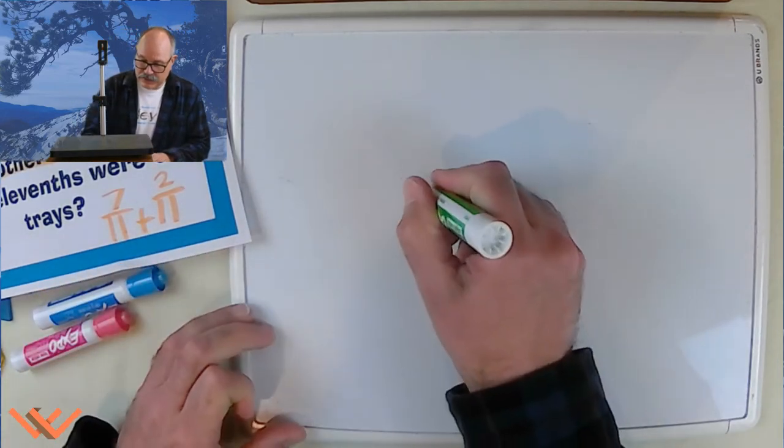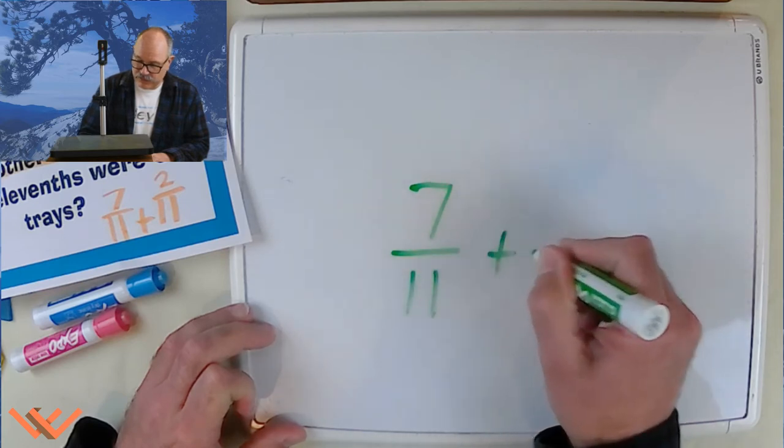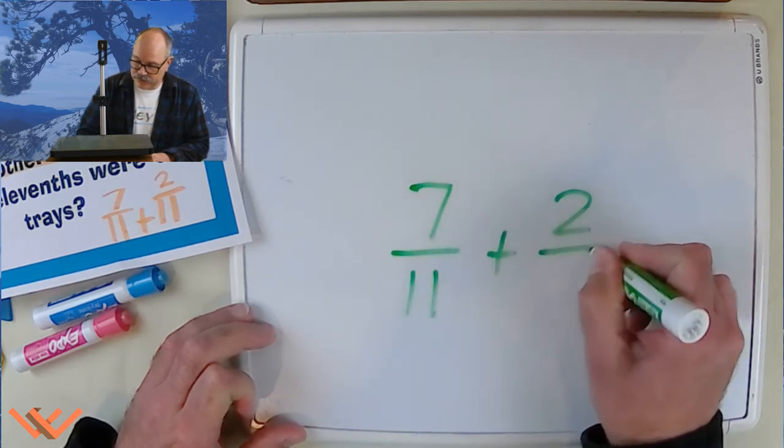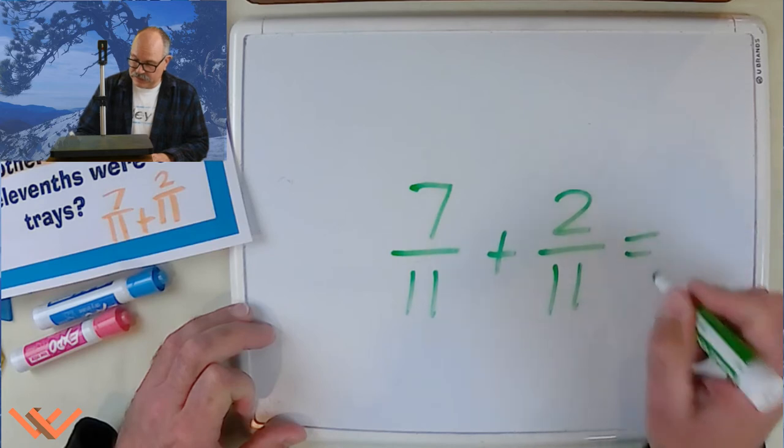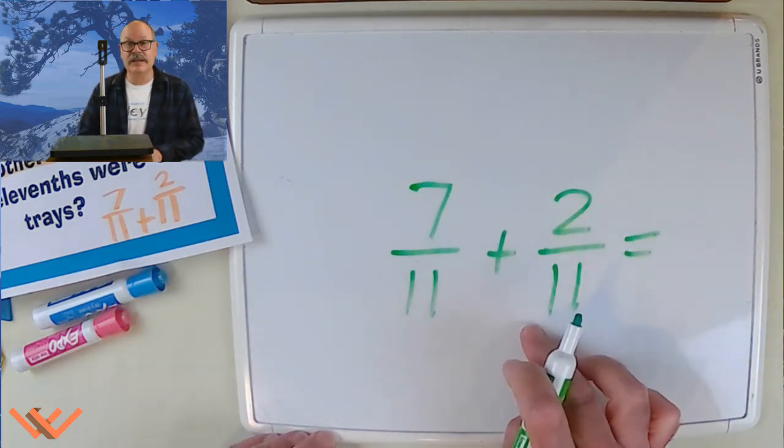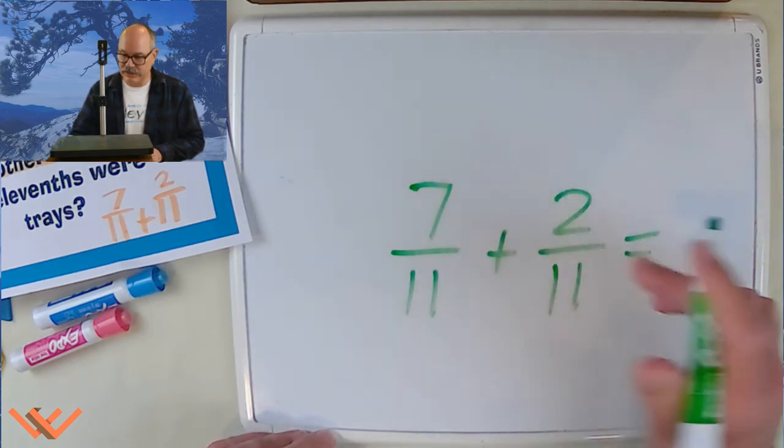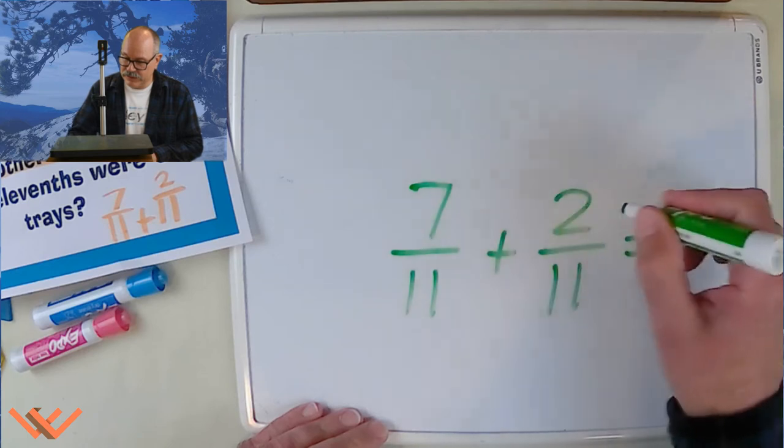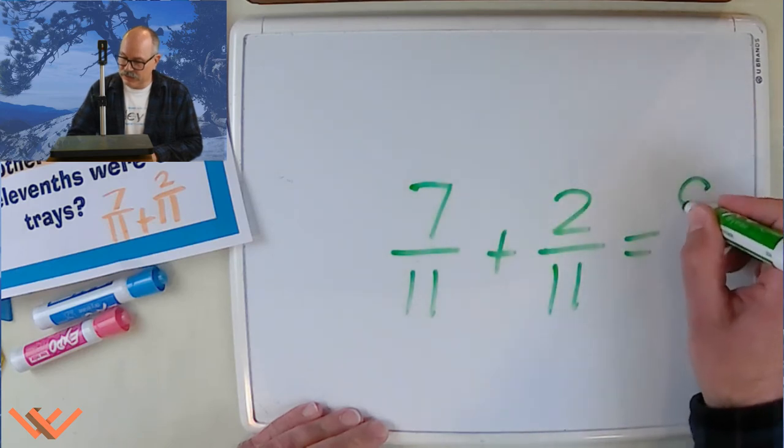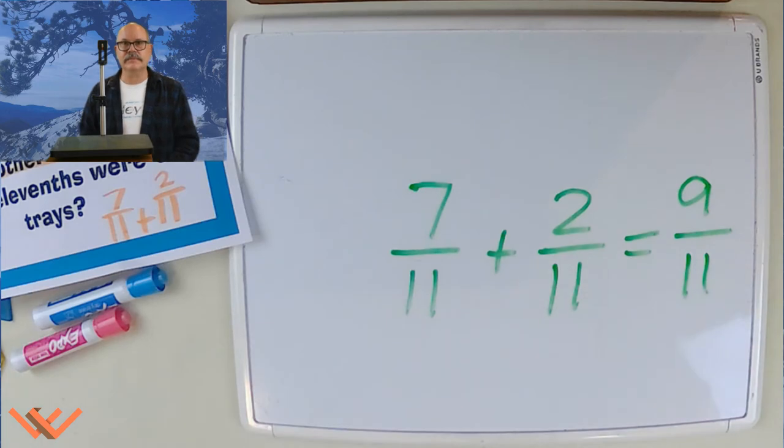So again, I have 7 elevenths plus 2 elevenths is equal to what? Well, since the denominators are the same, we just add up the numerators. So, that would equal 7 and 2 equals 9 elevenths. There you go. Easy peasy.